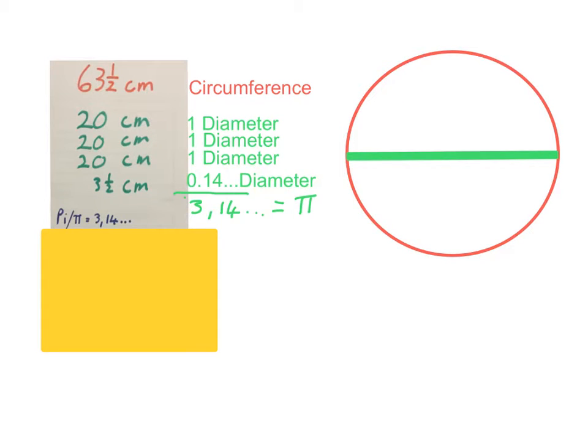And that is where we get pi from. We write pi like this and I want you to please take your calculator and push pi on the calculator and equal and you will see it gives you 3.14 and a lot of decimals.